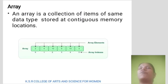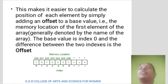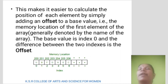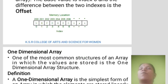Array is a collection of items of the same data type stored at contiguous memory locations. This makes it easier to calculate the position of each element by simply adding an offset to a base value — that is, the memory location of the first element of the array, generally denoted by the name of the array. The base value is index 0 and the difference between two indices is the offset.